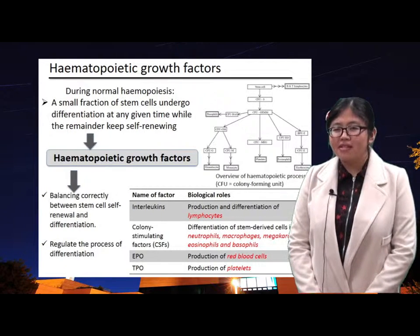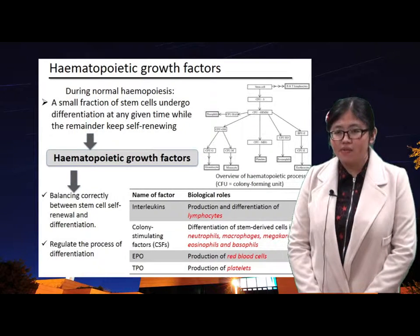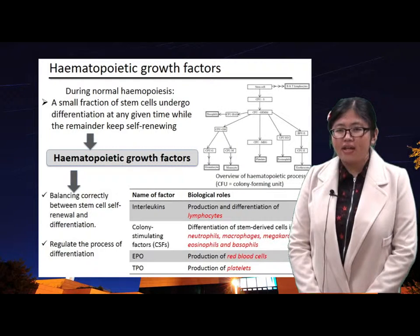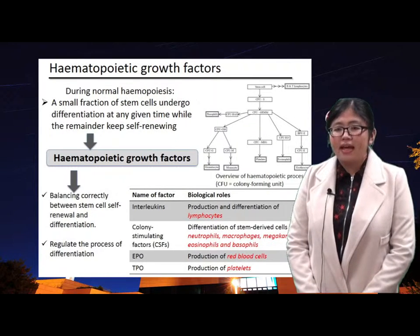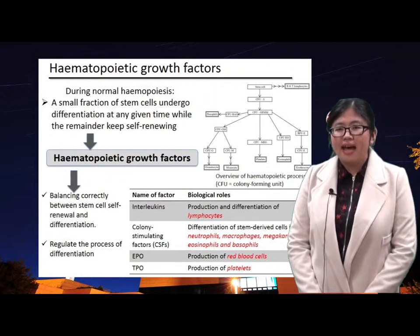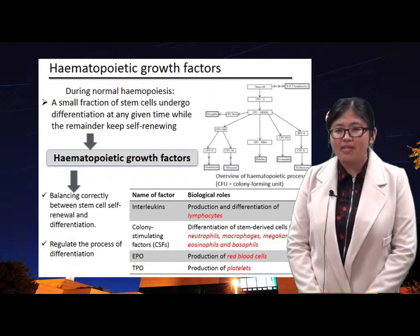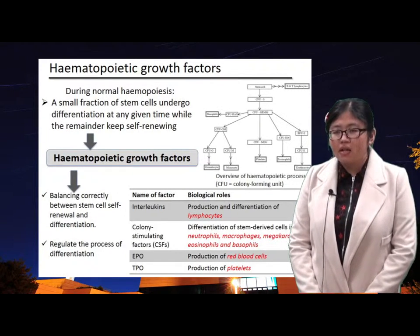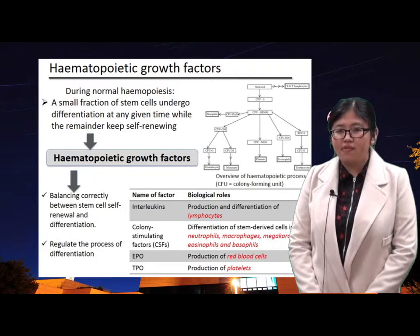Normal hematopoiesis occurs when a small fraction of stem cells undergo differentiation at any given time, while the remainder keeps self-renewing. Hematopoietic growth factors play an important role in hematopoiesis. They have to balance correctly between stem cell renewal and differentiation, and also regulate the process of differentiation.